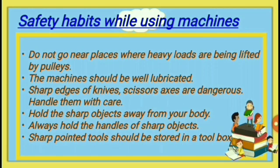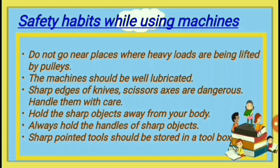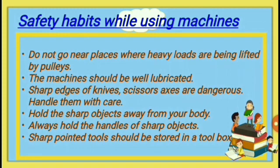Now let us study some safety habits to keep in mind while using machines. First, do not go near places where heavy loads are being lifted by pulleys, as they can fall and harm us. Machines should be well lubricated or well oiled. The sharp edges of knives, scissors, and axles are dangerous and should be handled with care. All sharp objects should be kept away from the body and handled by their handles. Sharp pointed tools like scissors and knives must always be stored in a toolbox. I hope you all have understood about machines, types of simple machines, safety habits, and how machines help us.